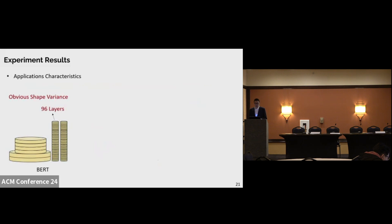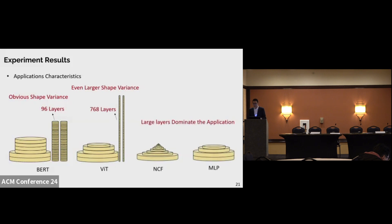Here we also visualize the characteristics of the application to help us explain our experiment results. For BERT, we have six relatively larger layers and two types of smaller layers with 96 layers in each type. We can observe obvious shape variance in this application. For the ViT, the shape variance is even larger in terms of the variance in both the size and the numbers, layers of smaller and large layers. For NCF and MLP, the larger layer dominates the application.